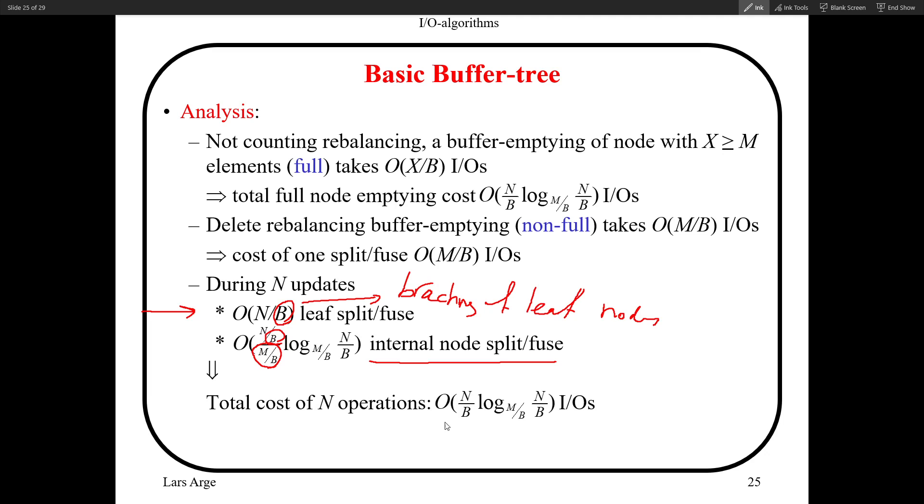When you add all of them up, you'll see that in total, they're still bounded by essentially the sorting complexity. So that shows that all of these operations that we're going to do over N operations, we have essentially the sort bound. This shows that we can actually sort using this basic buffer tree.